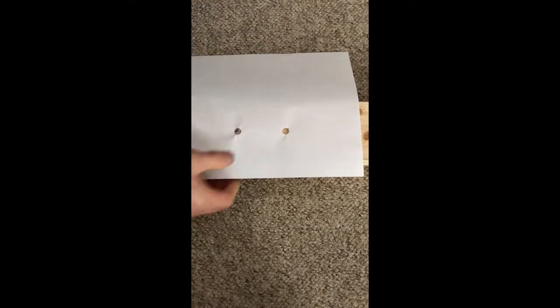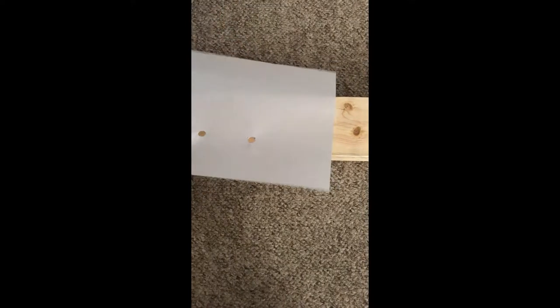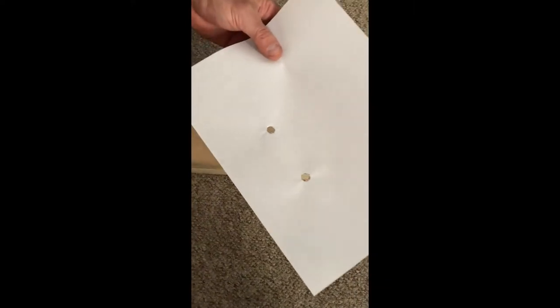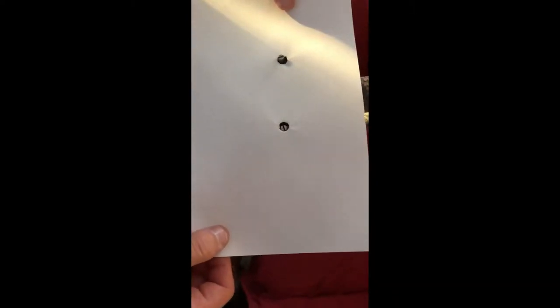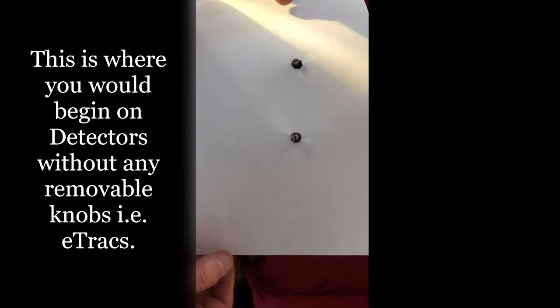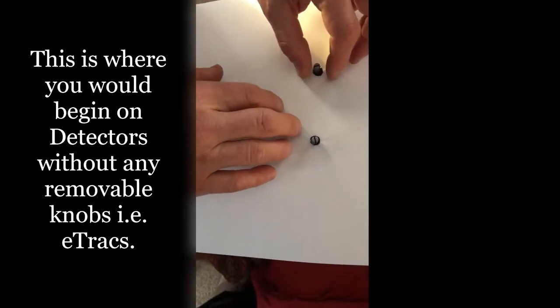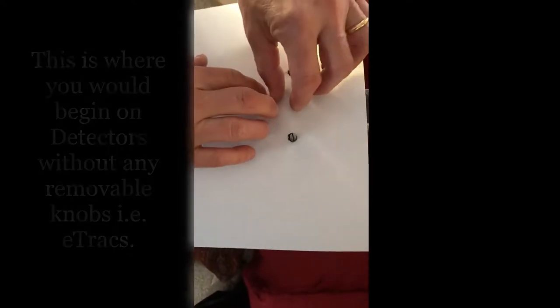This is your pattern for cutting out a screen protector. Now you got your two holes punched out. Bring the paper over to your detector. Make sure the holes line up properly with the switch posts. Hold it in place.